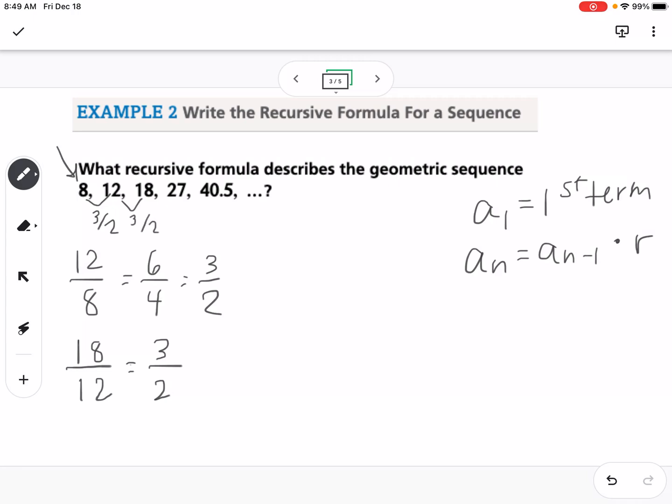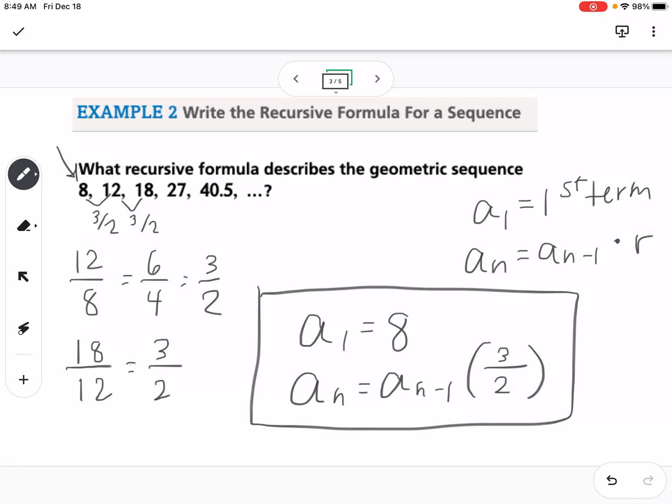That means we're multiplying by 3 over 2 each time. So my recursive formula would be a1 equals 8, my first number, and then an equals an minus 1 times – and sometimes it's easier to use parentheses, especially with fractions – times 3 over 2. That right there is my recursive formula.